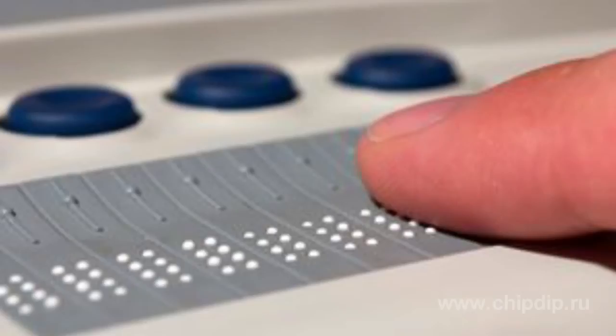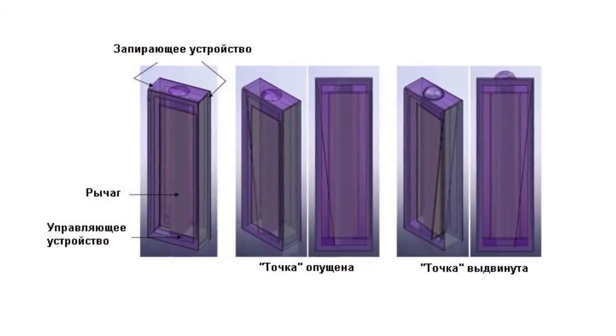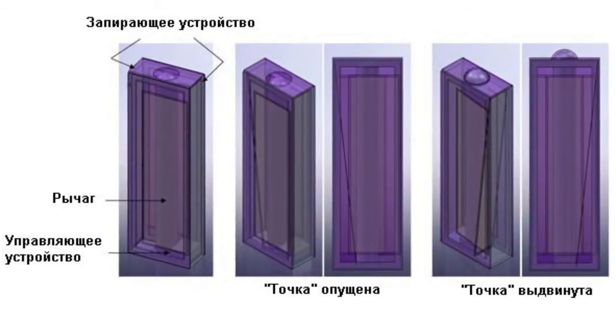The mechanism used to lift the dots is based on a set of several piezo-crystals that expand when voltage is applied. However, such expansion is not enough to lift the dot, which is why the crystals are connected with a lever, pushing the dot in the upward direction. This structure enables the cells to dynamically alter their state depending on the data that needs to be shown using Braille characters.